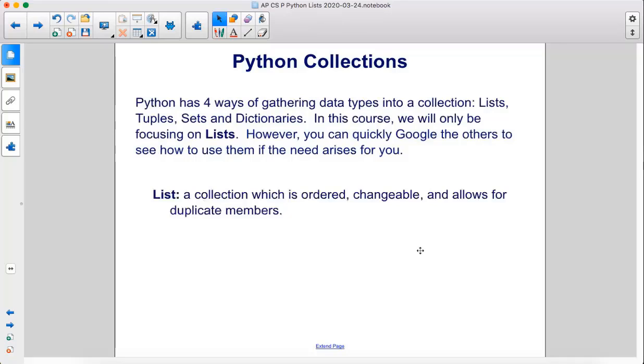Python has four ways of gathering data types into a collection: lists, tuples, sets, and dictionaries. In this course, we will only be focusing on lists. However, you can quickly Google the others to see how to use them if the need arises for you.